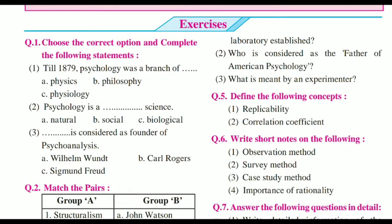We'll start with the objectives. Till 1879, psychology was a branch of — the answer is B, philosophy. Second, psychology is a — the answer is B, social science. Next, who is considered as a founder of psychoanalysis? The answer is C, Sigmund Freud. So the answers for the objectives are B, B and C.